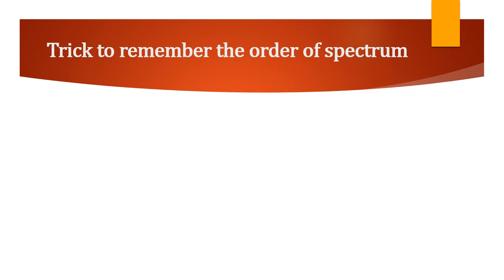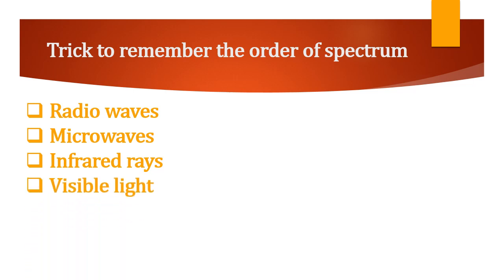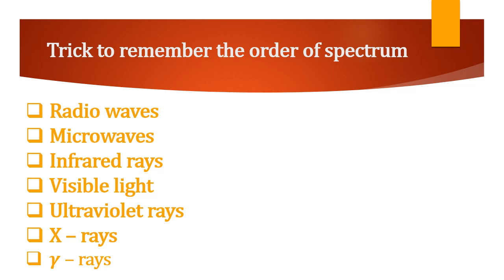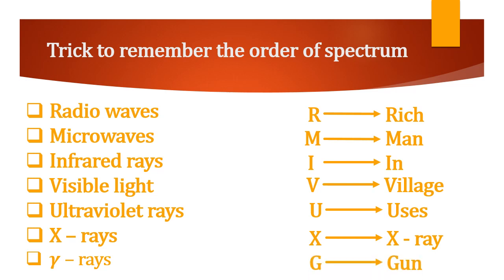Before that, let us first write the waves in a definite order: radio waves, microwaves, infrared rays, visible light, ultraviolet rays, X-rays, and gamma rays. As a student, I find this method very easy to remember the order of the spectrum. R means rich, M means man, I means in, V for village, U for uses, X for X-ray, and G for gun. That is: rich man in a village uses X-ray gun.